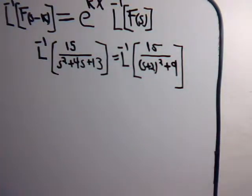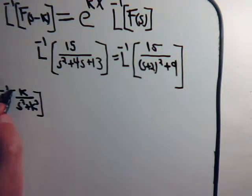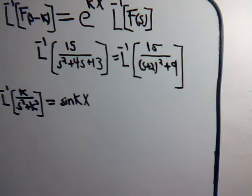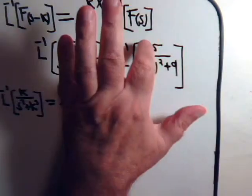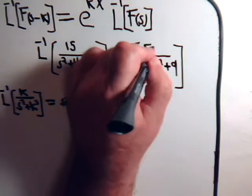Now notice that on your table of transforms, the inverse Laplace transform of k divided by s squared plus k squared is the sine of k times x. And in the numerator, that has to be the square root of what I'm adding to the s squared, which is 9. So we can write this as 5 times 3.